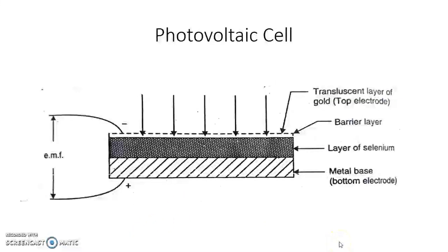The photovoltaic cell is a transducer that measures incident light in terms of the voltage developed. It converts light energy into electrical voltage, so input light energy is measured in terms of voltage. The sensitive element is a semiconductor which generates voltage in proportion to the light energy incident on it. The most commonly used photovoltaic cells are barrier layer types, such as iron and selenium cells.